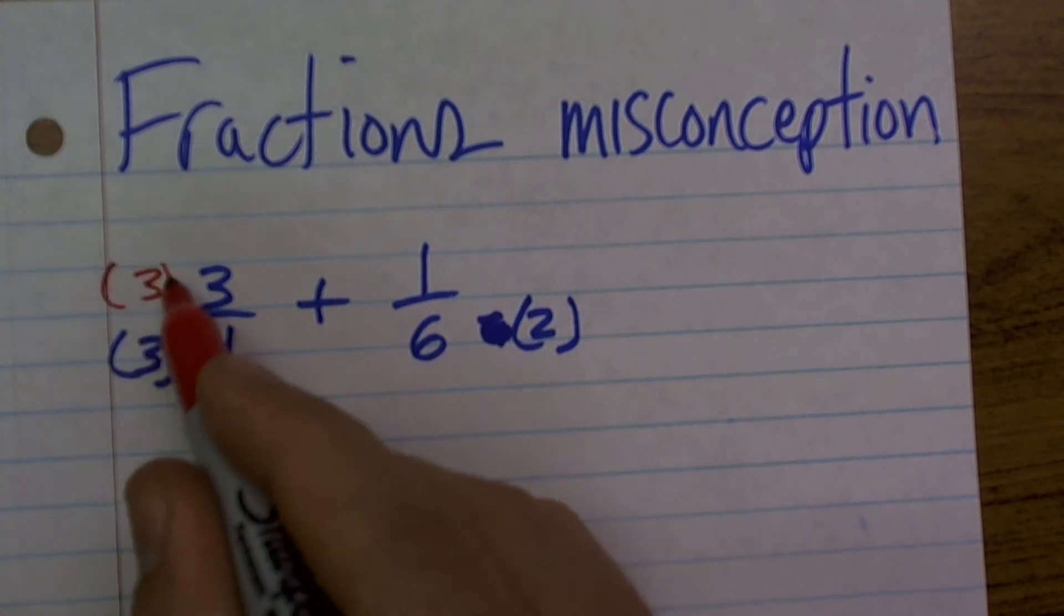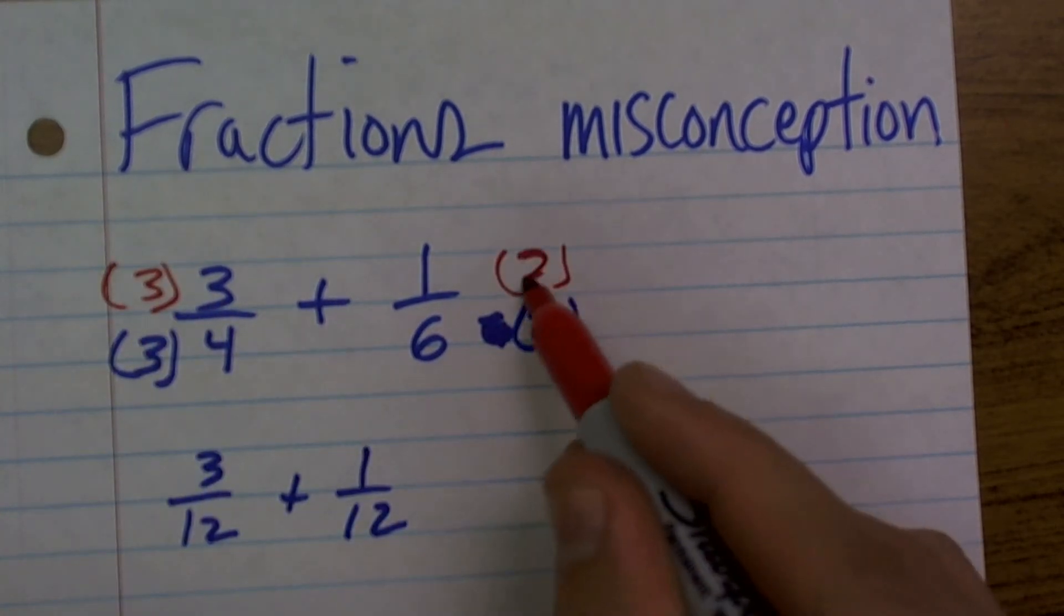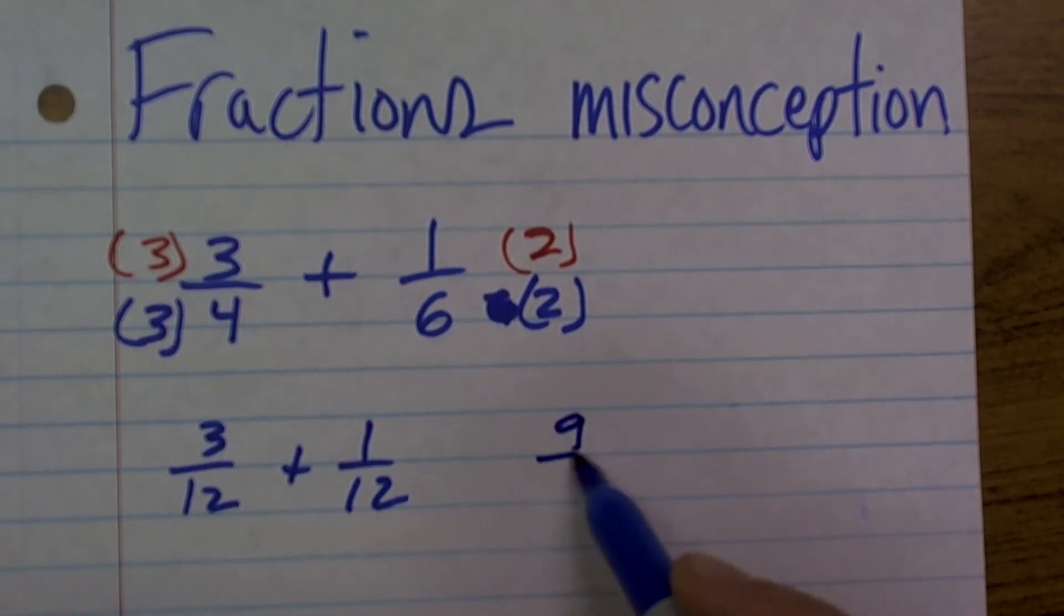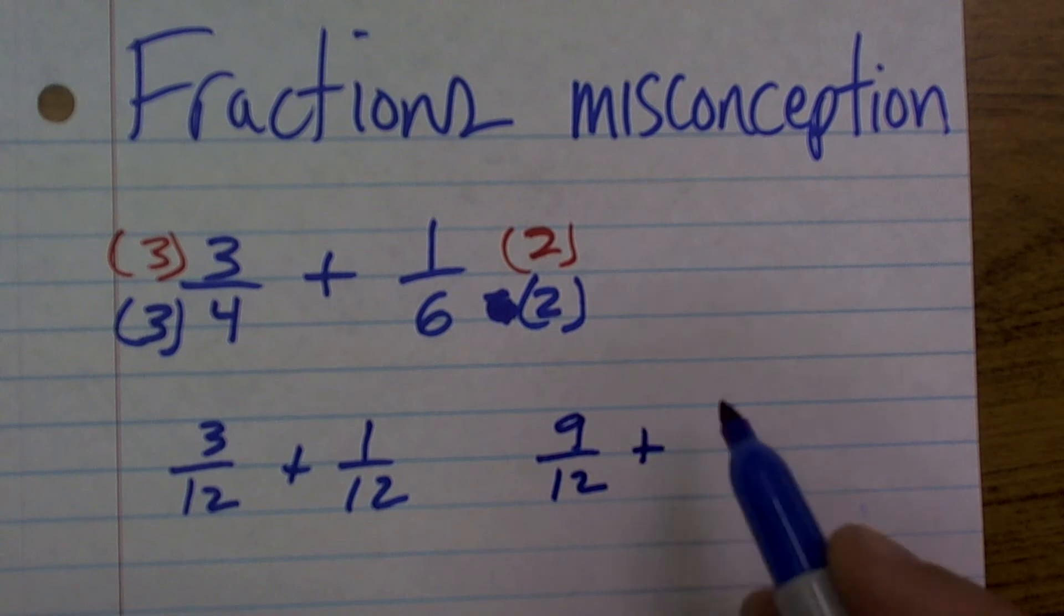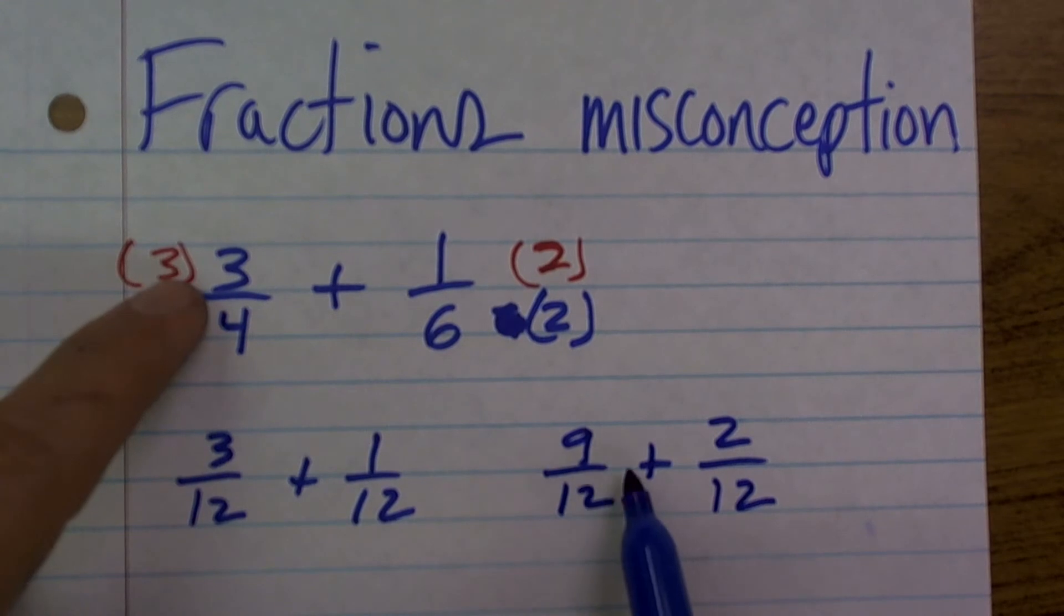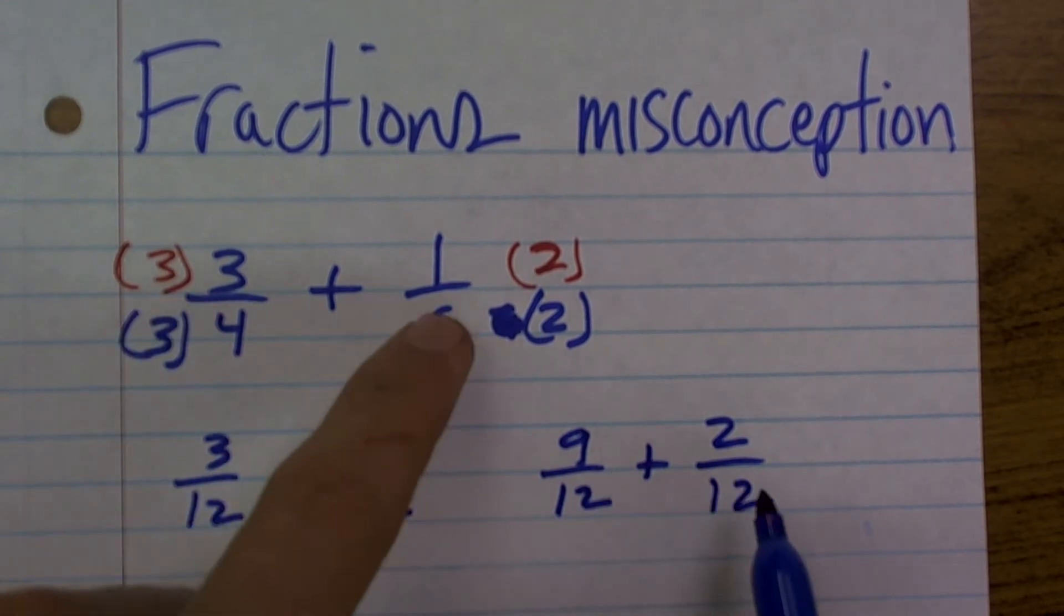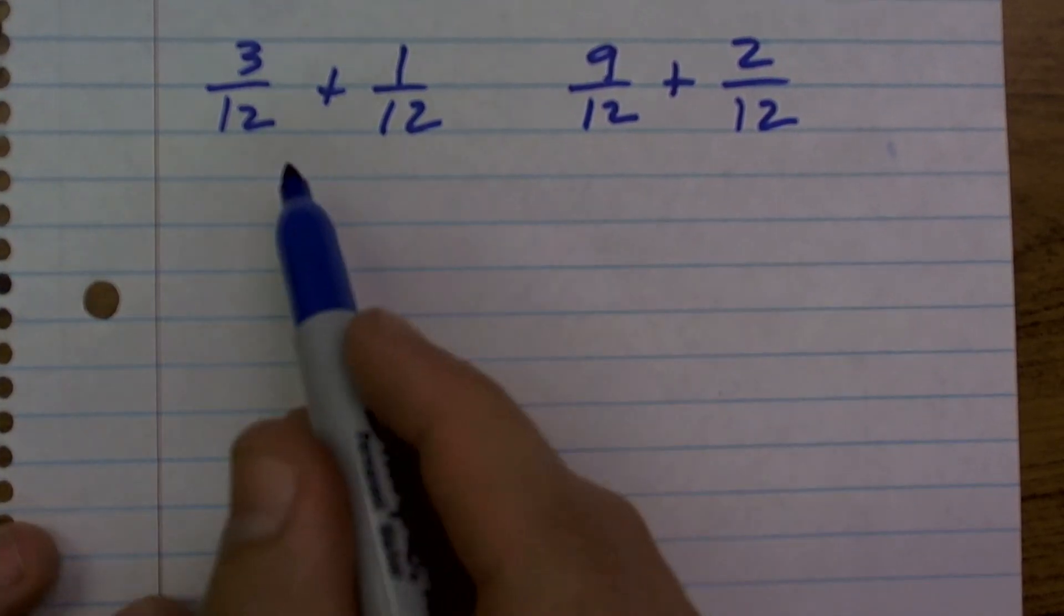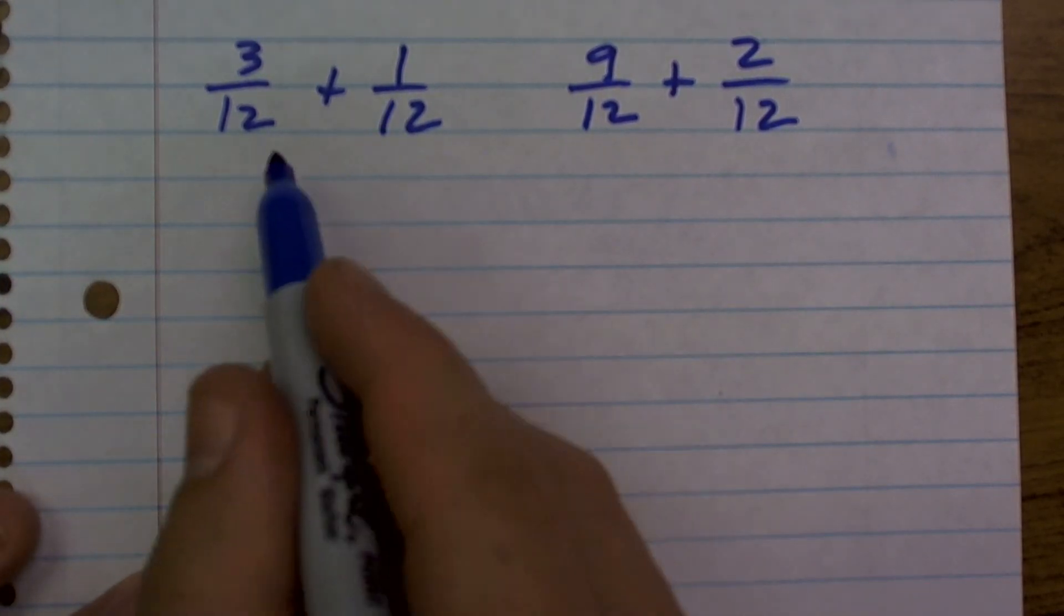So let's take a look at what the answer should be originally. If you were to multiply your numerator and your denominator by their same number, what you should get is actually 9 over 12 plus 2 over 12. And therefore you know that 9 twelfths and 3 fourths are equivalent fractions, and 1 sixth and 2 twelfths are equivalent fractions. So let's take a look at what the bars would look like for these.